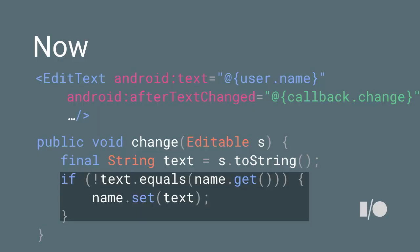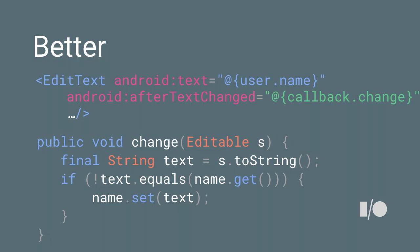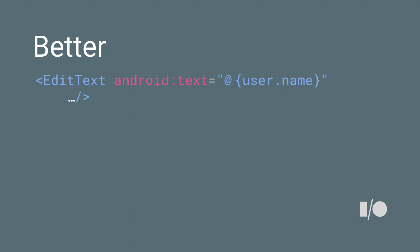We want to do something a little better than that. Get rid of all that stuff and we can do this by just saying at-equals instead of just at-curly-brace. The at-equals is a nice, quick, and very visible indicator that this is a two-way data-bound field. Now we can bind to the Android text field in a very simple way.